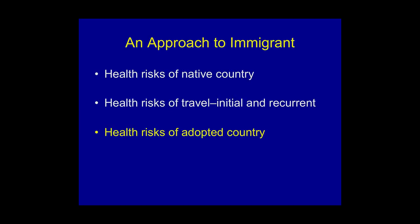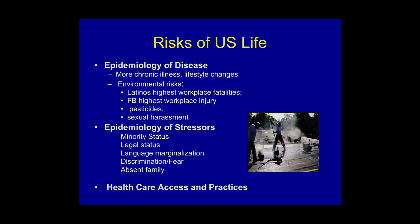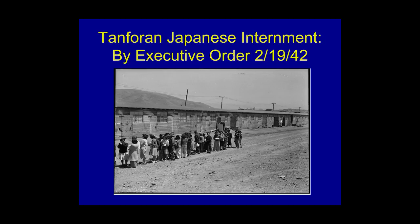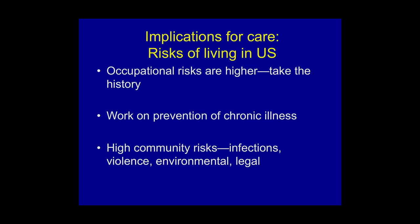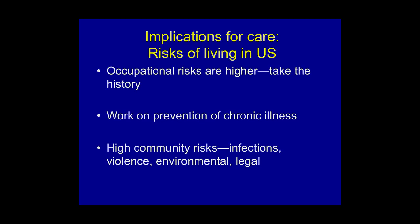Then of course there are all the risks of coming to the adopted country. There are many risks of US life: a different epidemiology of disease, higher environmental risks, and many things that can be more stressful — including executive orders like the Japanese internment camps during World War II, and more recent ones as well. Occupationally, many risks are high. There are whole new chronic diseases, such as much higher rates of diabetes among immigrants in the US than in their home countries.